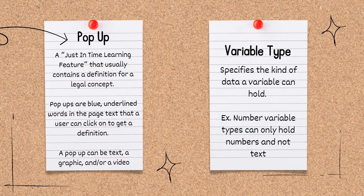A pop-up is a just-in-time learning feature that usually contains a definition for a legal concept. Pop-ups are blue, underlined words in the page text that a user can click on to get a definition. A pop-up can be text, a graphic, and/or a video.